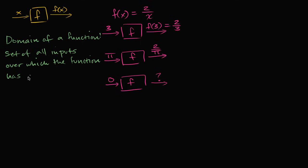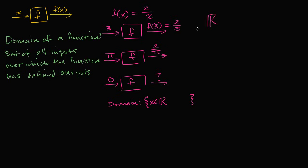So the domain for this f in particular — if I wanted to say its domain, I could say it's going to be the set, using these curly brackets, which are typical math set notation. x can be a member of the real numbers — this symbol means a member of the real numbers — but it can't just be any real number. It can be most real numbers except it cannot be zero, because it's undefined when you put an input of zero. So: x is a member of the real numbers such that x does not equal zero.